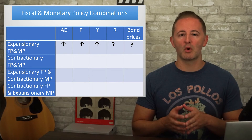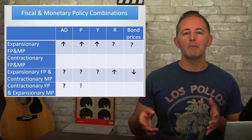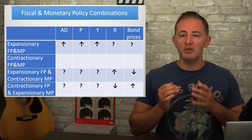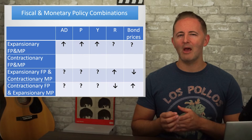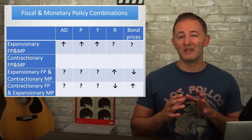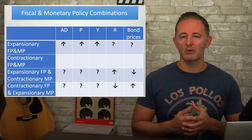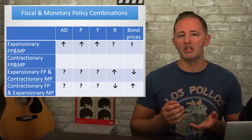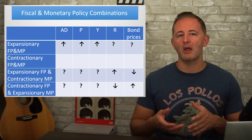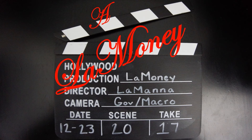Interestingly, if we make combos where one policy is expansionary and the other is contractionary, the opposite situation emerges. We know what will happen to interest rates, but now we aren't so sure about AD, Y, and P anymore. I'll warn you that test questions on this section can be sneaky tough sometimes. So be careful. Think them through. Just think of each policy in isolation and then compare what's similar and different about their outcomes. Alright, well, that's it for this one.